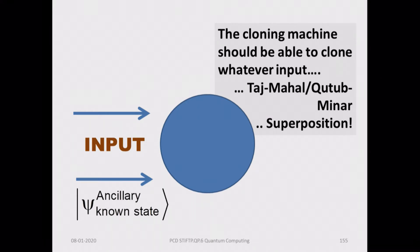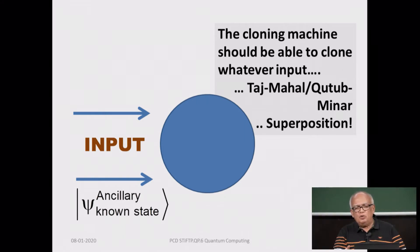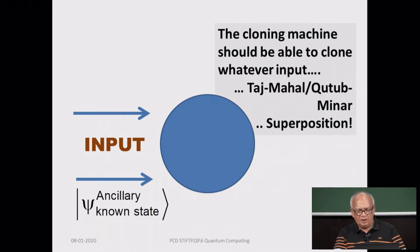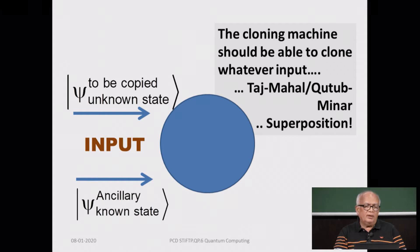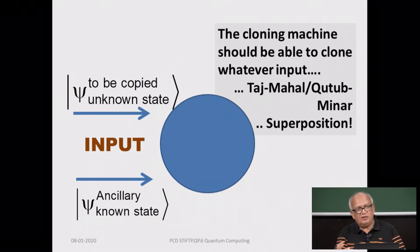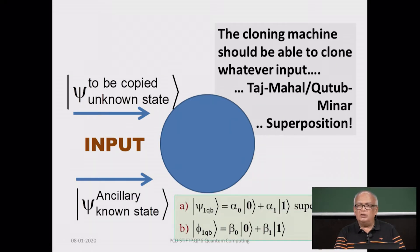We agreed that the cloning machine has to be able to clone whatever is input to it, whether it is the Taj Mahal or the Qutb Minar or whatever. Likewise, the quantum cloning machine should be able to clone any state vector that you feed into it, which describes the physical state of a system. That is your expectation from a cloning machine — that is what you will call a quantum cloning device.